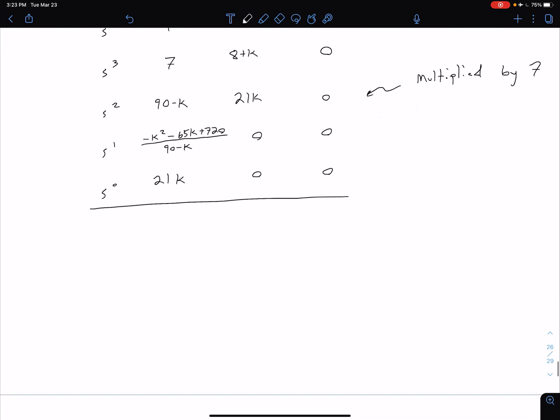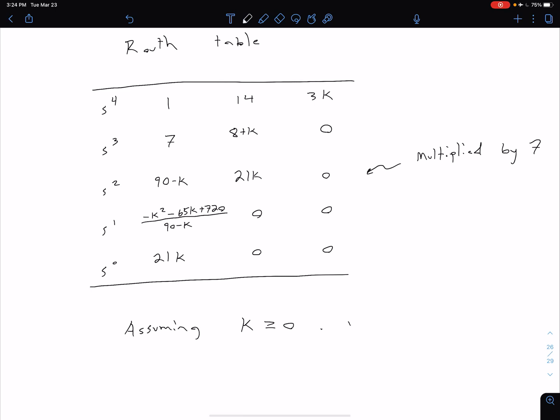We're going to assume our gain is positive, so we're assuming that our K is greater than or equal to zero. Remember, what we're trying to get here is we want a row of zeros in our Routh table. We can't have that in these first two rows because we have our 1, our 7, our 14, which are just fixed values. We could have it with our 21K, but that's a gain of zero, so that's not really going to be too helpful.